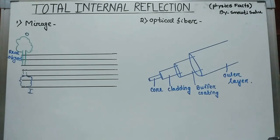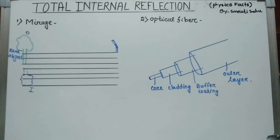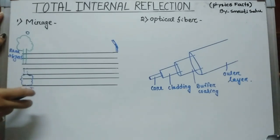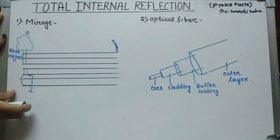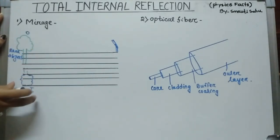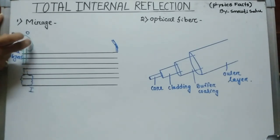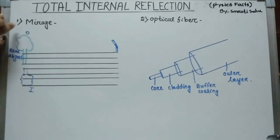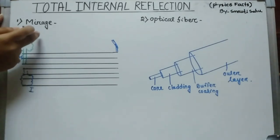Now let's discuss some phenomena based on total internal reflection. The most popular are mirage formation and optical fiber. First, how is a mirage produced? It is an optical illusion observed in deserts where a traveler can see a shimmering pond of water or a watery image near a tree.